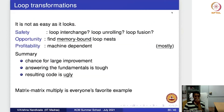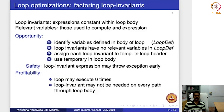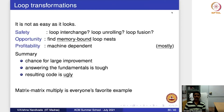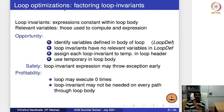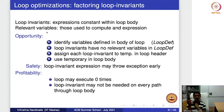When we do this loop transformation, we want to examine safety, opportunity, and profitability — the same three questions as before. For loop invariant code motion, let's study: how to find the opportunity, how to do the transformation, whether it is safe, and whether it is profitable.